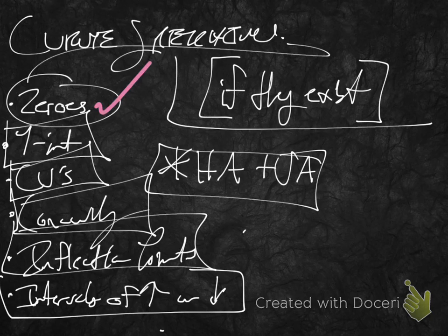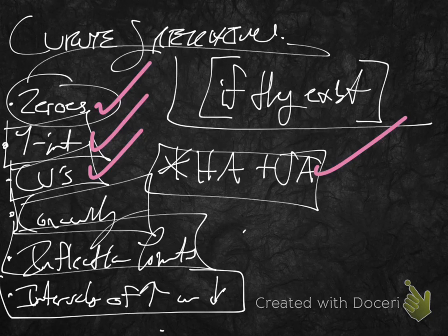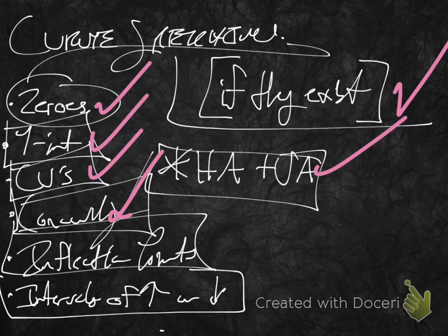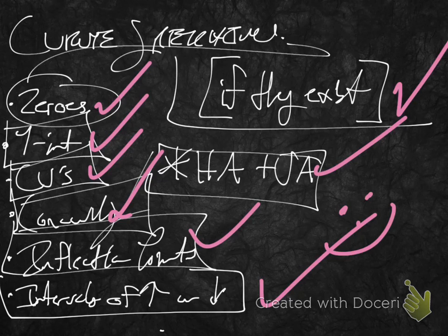I believe we have talked about everything: zeros, y-intercepts, critical values, horizontal and vertical asymptotes, why functions must pass the vertical line test so you can't have more than one y-intercept, concavity, inflection points, and intervals of increase and decrease. We are done. Look for more videos I've put up about curve sketching, and if you have any other concerns, just leave a comment.